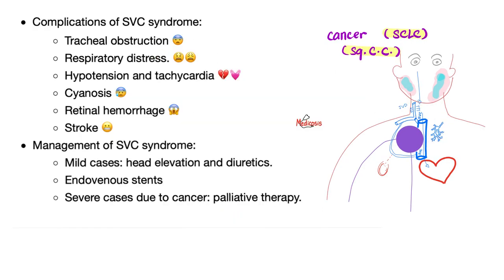Complications include obstruction of the trachea, respiratory distress, hypotension and reflex tachycardia, cyanosis, retinal hemorrhage because of the congestion, and stroke because of low cardiac output — i.e., ischemic stroke. How can we manage this? Mild cases: head elevation and diuretics. You can place a stent. But if the patient is stage 4 lung cancer and is about to die, there is no point in going aggressive on the SVC syndrome, because SVC syndrome is a symptom of a bigger underlying issue.